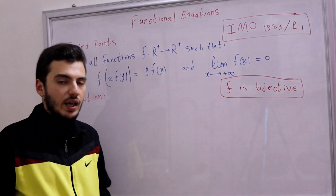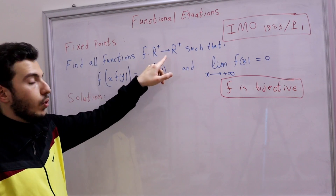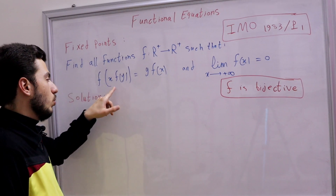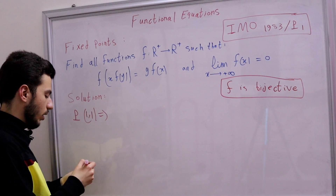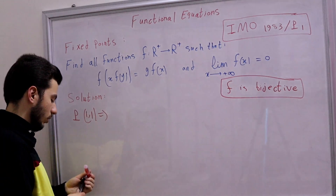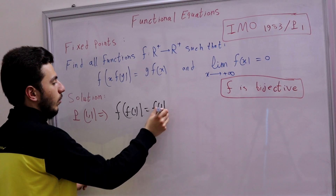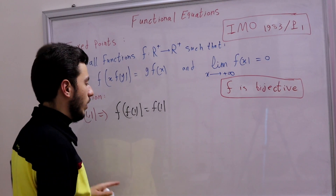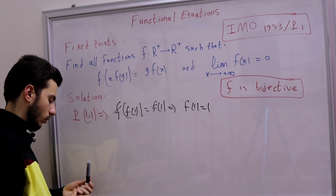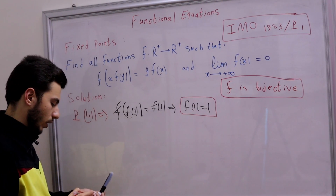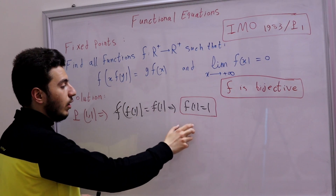Now let's substitute. We can't use 0 but we can substitute x = y = 1, written P(1,1). This gives us f(f(1)) = f(1). Since f is bijective and thus injective, we can cancel one f, giving us f(1) = 1.